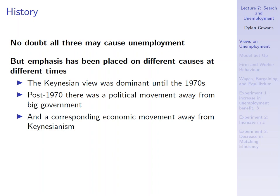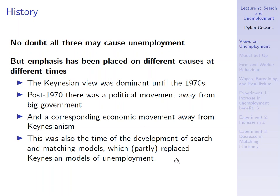The Keynesian view dominated until about the 1970s. Post-1970, there was a political movement away from big government — figures like Ronald Reagan in the US and Margaret Thatcher in the UK. Conservatives were moving away from Keynesianism, which was seen as supporting big government; Keynesians traditionally said unemployment is a problem government can fix by spending more. When there was this political shift toward conservatism, you saw similar movements in economics, away from Keynesianism.